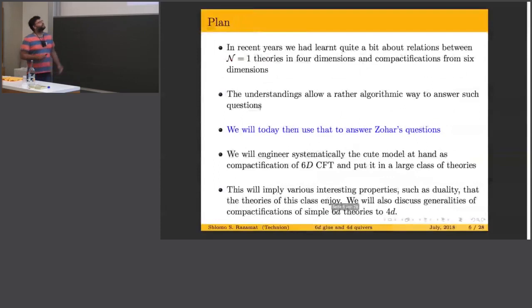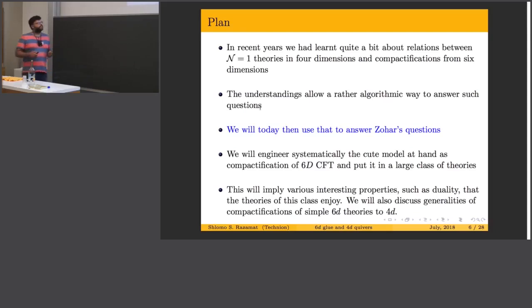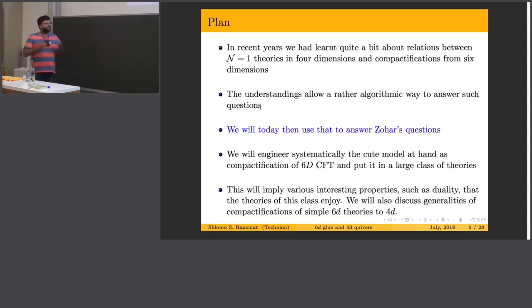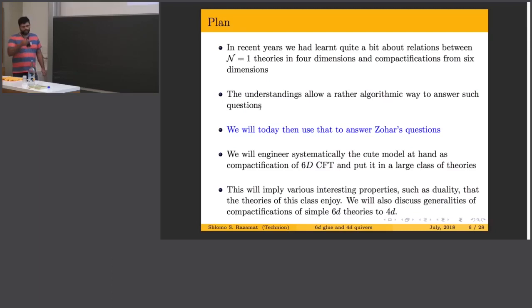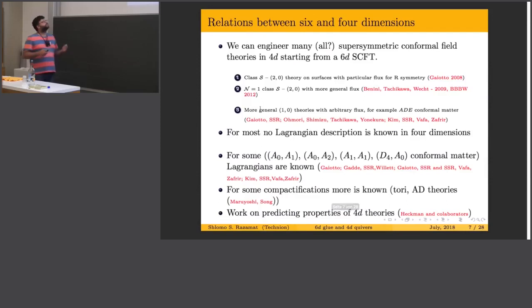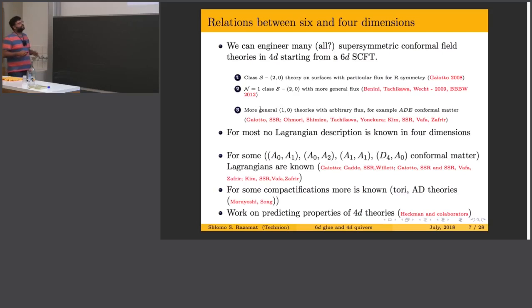We will engineer these types of theories with SU(3) gauge groups and nine flavors using six dimensions. In recent years we have acquired some algorithmic understanding about engineering four-dimensional theories starting from six dimensions. We can use this understanding to answer these types of questions — we will engineer rather systematically this very simple model starting from six dimensions. This engineering, this way of thinking about the theory, will imply a lot of interesting properties, dualities and so on, and will answer the questions we have posed.